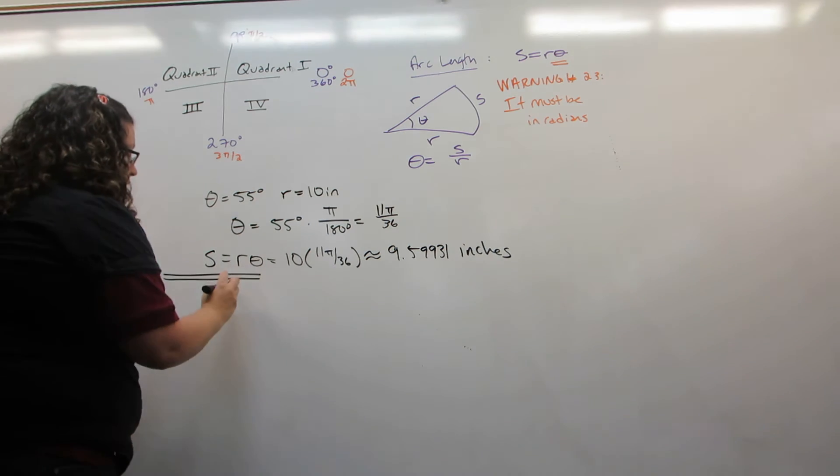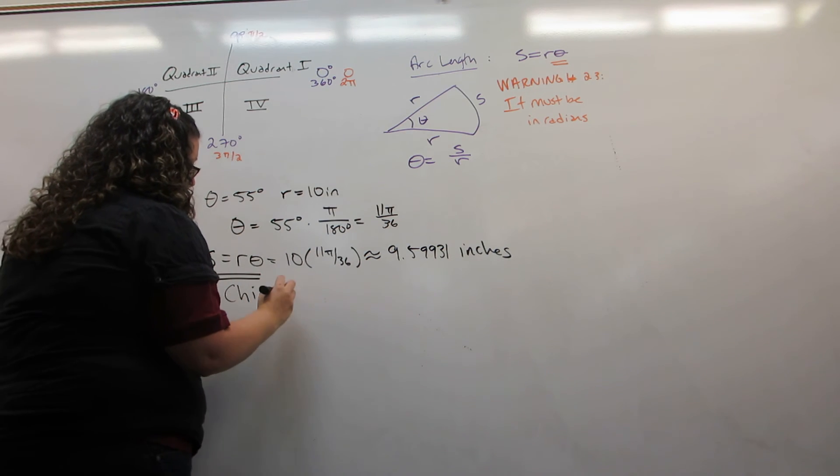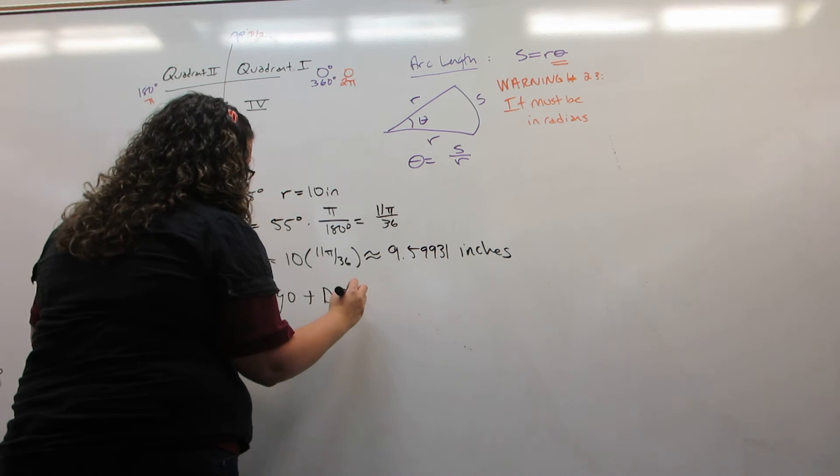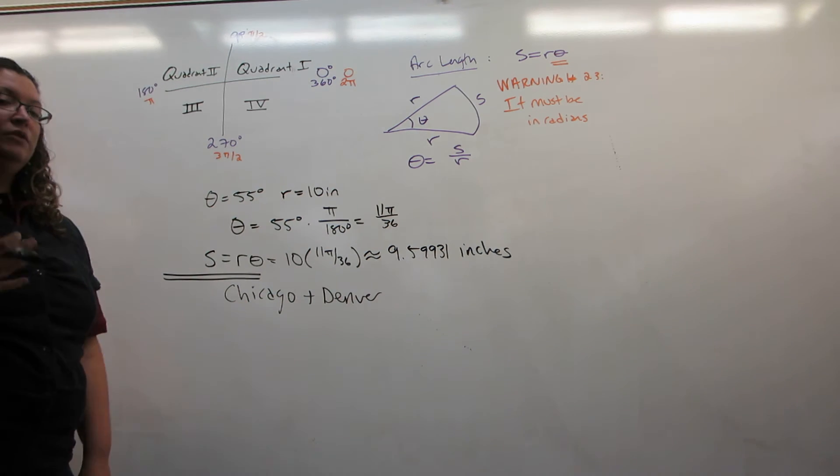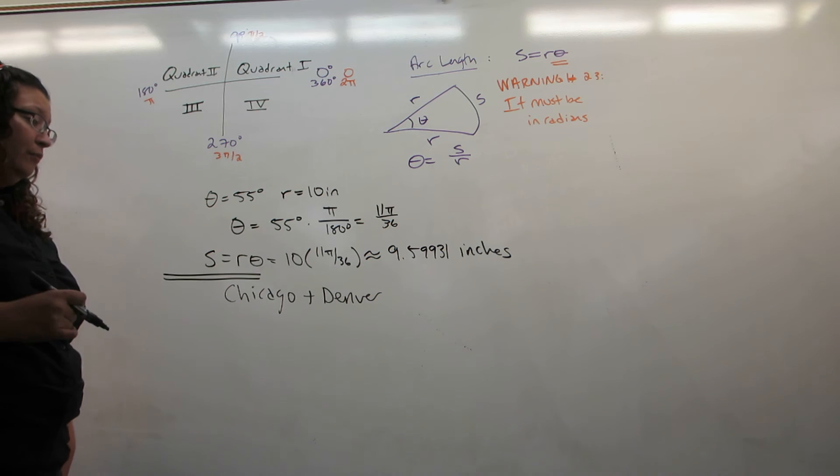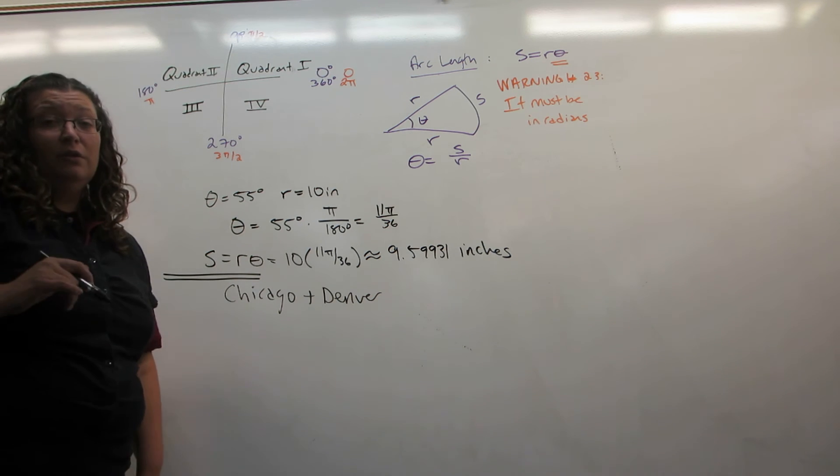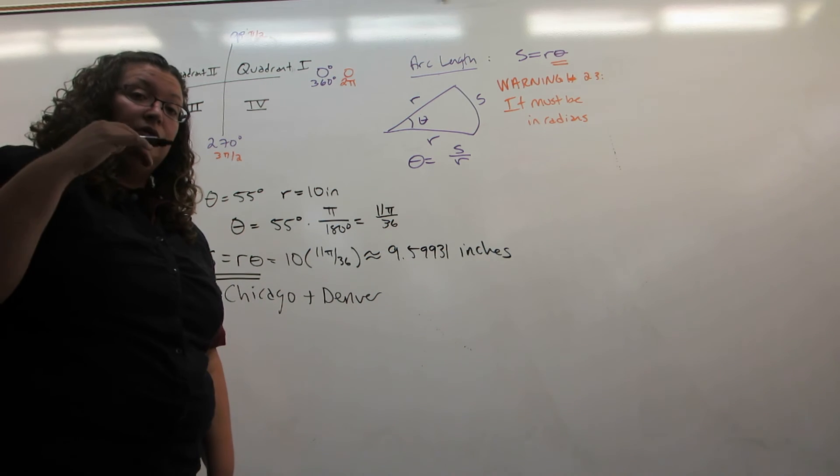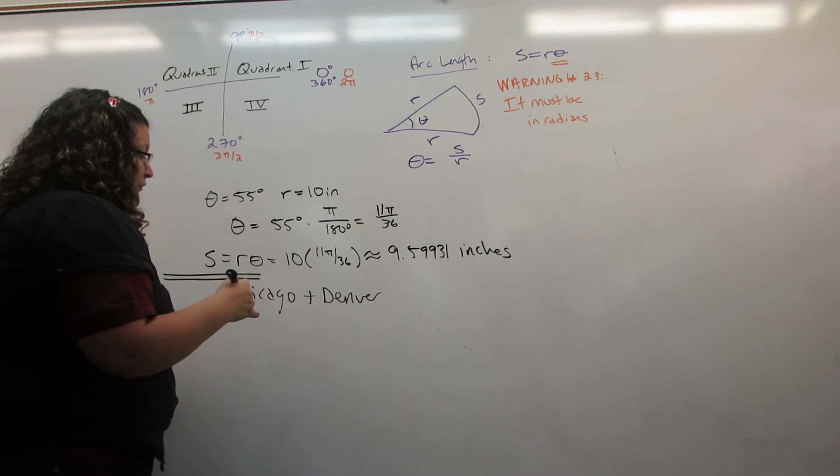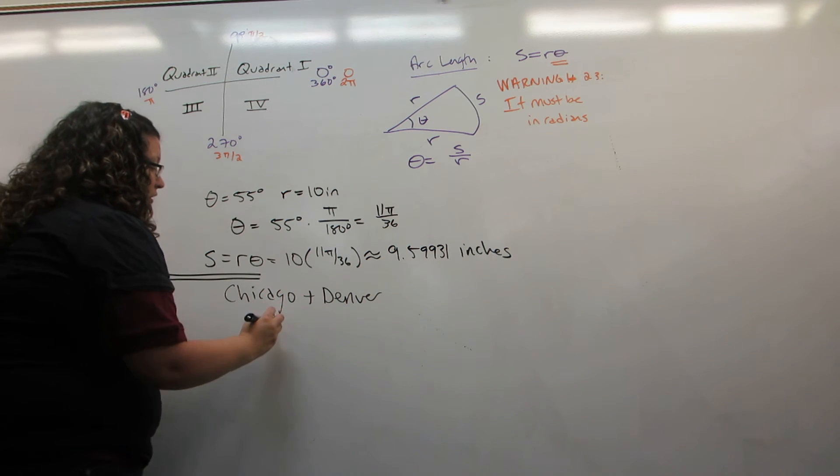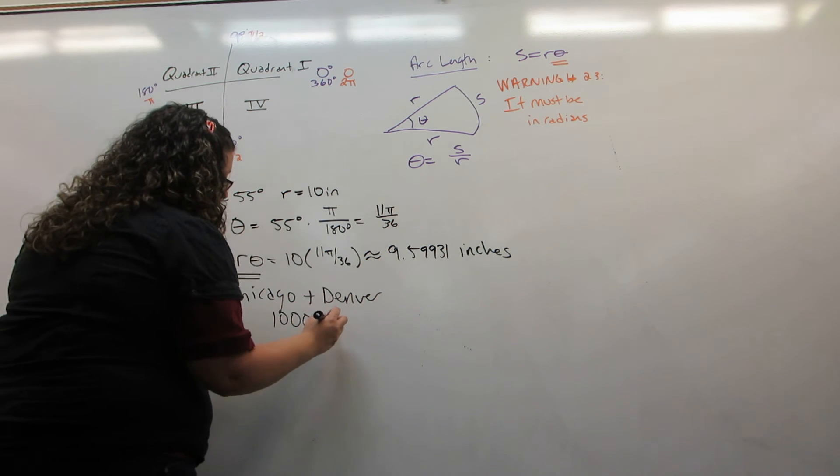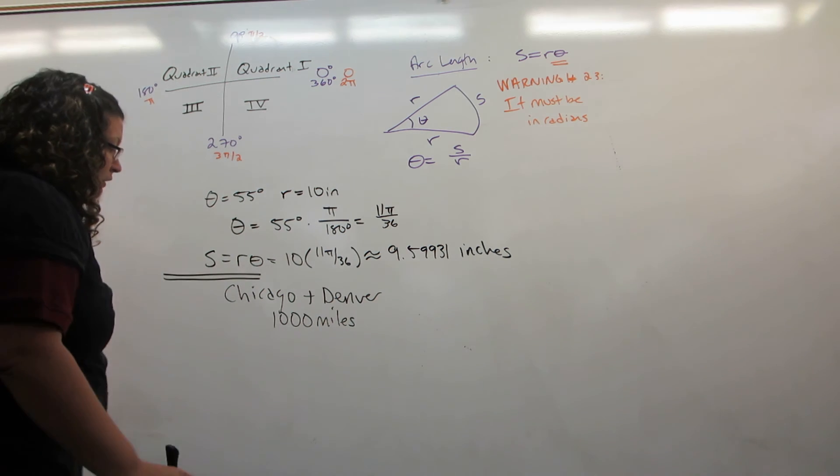Chicago and Denver are the center of two consecutive time zones in the United States. Furthermore, they happen to be fairly close to the same latitude, which is important for this kind of calculation. They are also almost exactly a thousand miles apart.